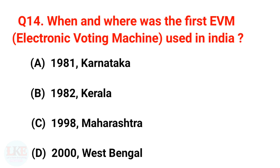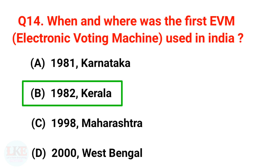Next question: When and where was the first EVM (Electronic Voting Machine) used in India? The right answer is option B, in 1982 in the state of Kerala.